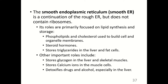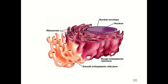Other important roles of the smooth ER include storing glycogen in the liver and skeletal muscles, storing calcium ions in muscle cells, and detoxifying drugs and alcohol, especially in the liver. The smooth ER does not contain ribosomes and is primarily concerned with synthesizing and storing fats.